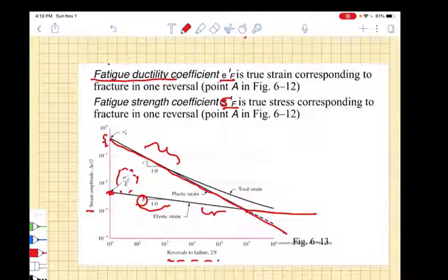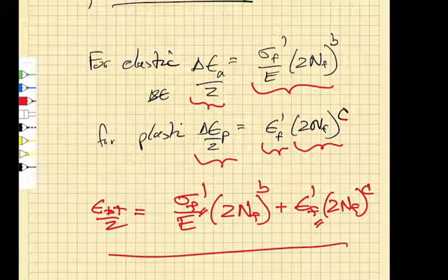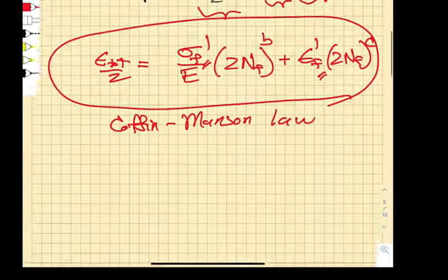And you convert that true stress into an elastic strain by dividing it by the elastic modulus. So you have these two terms. And these two terms forms what's called the Coffin-Manson law.